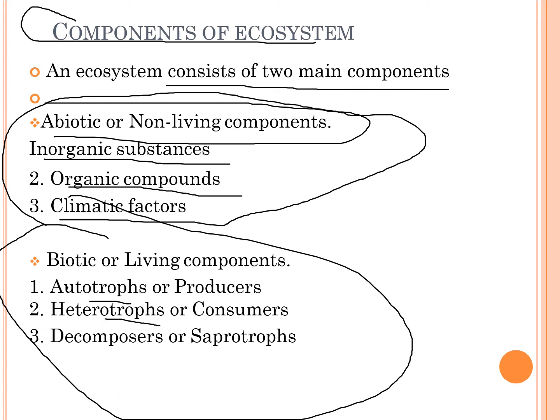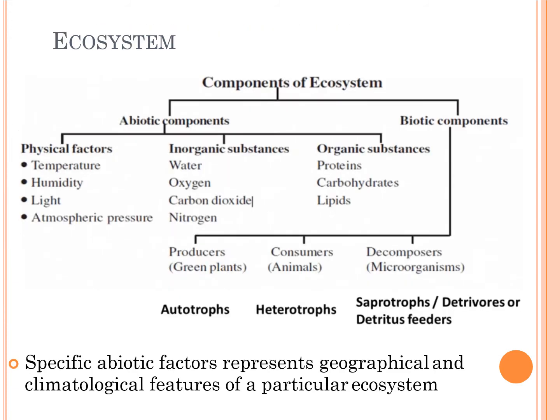Talking about the living or biotic components, we have autotrophs or producers, heterotrophs or consumers, and saprophytes or decomposers.